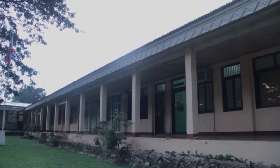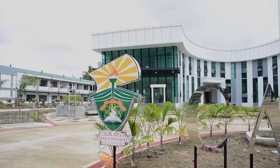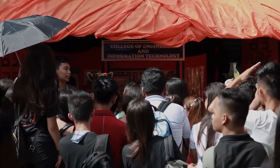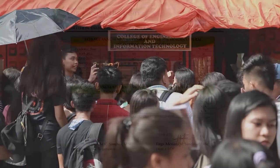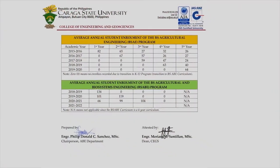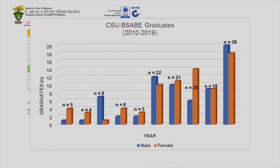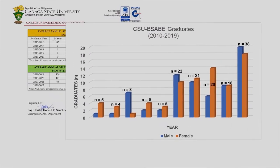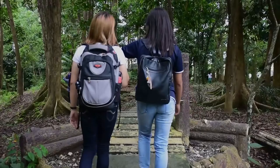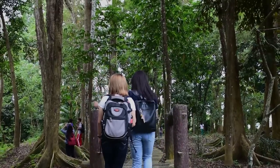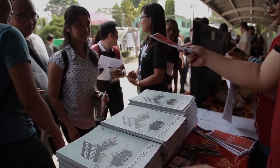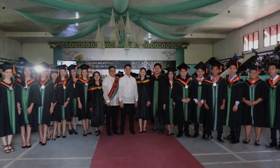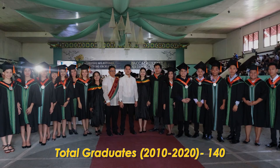Since 2005, the number of students taking up Bachelor of Science in Agricultural and Biosystems Engineering in Caraga State University has significantly increased, resulting in the corresponding increase of Agricultural and Biosystems Engineering graduates per year. From 2005 to 2020, the Bachelor of Science in Agricultural and Biosystems Engineering program has produced a total of 113 graduates.